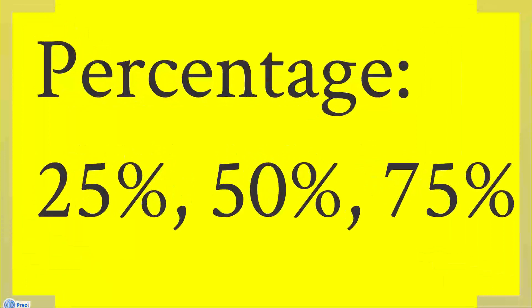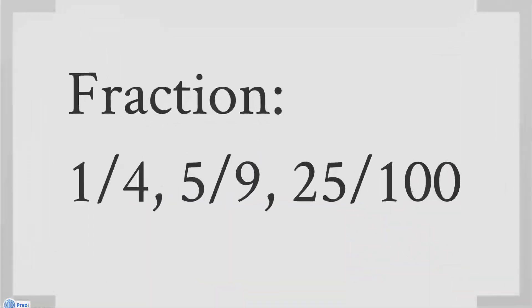Probability can be expressed as odds — these odds would read 3 to 1, 5 to 4, 25 to 75. It can be expressed as a percentage: 25%, 50%, 75%, etc. Fractions, which may look similar to odds, would be said 1 out of 4, 5 out of 9, 25 out of 100, or 5 ninths. Notice that 25 out of 100 means that the event will occur 25 times out of a total possible 100 opportunities. Whereas, when we speak of odds, 25 to 75 would be the equivalent — meaning it will happen 25 times and it won't happen 75 times.